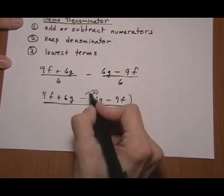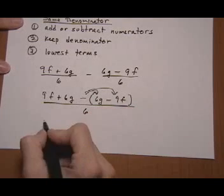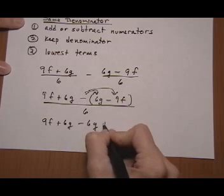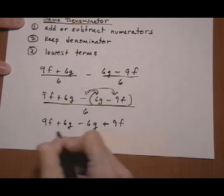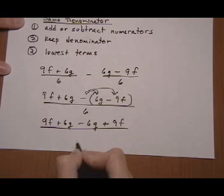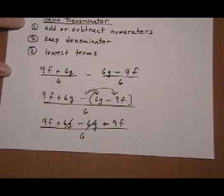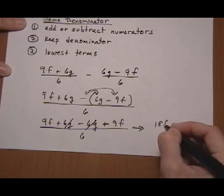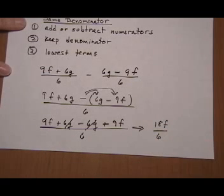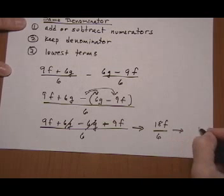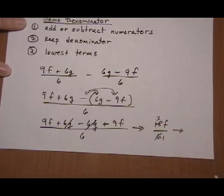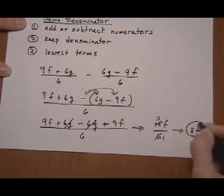And then we go ahead and distribute. So we have 9f plus 6g take away 6g plus 9f all over 6. 6g and minus 6g are gone. So that leaves us with 9f and 9f which is 18f over 6. And then we want to reduce it. We can divide by 6 top and bottom, and we're left with 3f as the final answer.